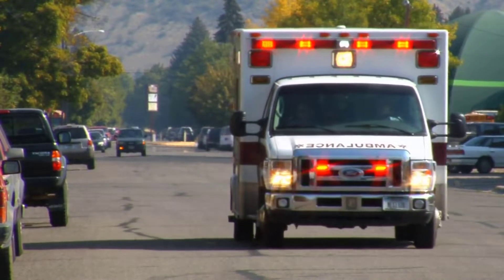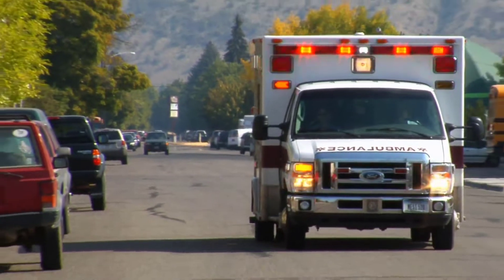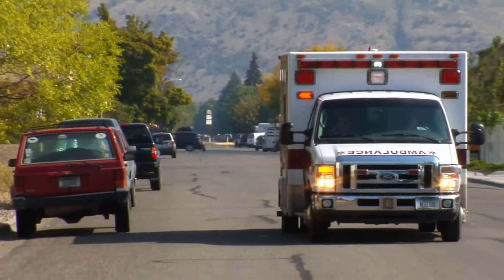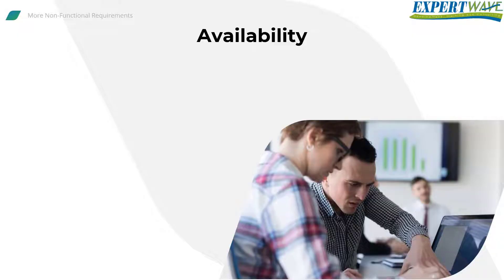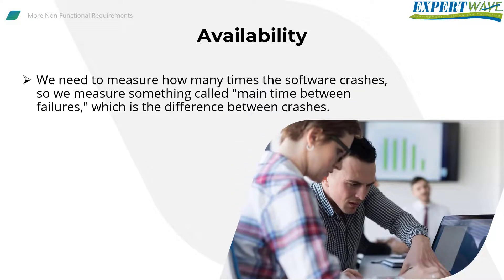Such requirements need distinctive design and coding styles, so it's better to know this requirement very early. When testing such systems, measuring availability remains a challenging task. We need to measure how many times software crashes occur — hence we measure mean time between failures, which is the difference between crashes. If I know the availability requirement matters in my system, then I should care more about the measures and tests that should be taken.